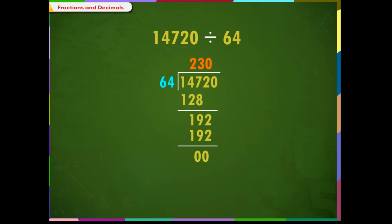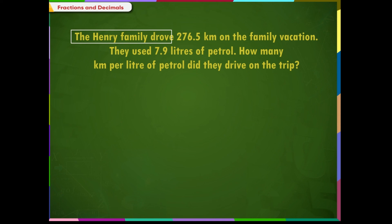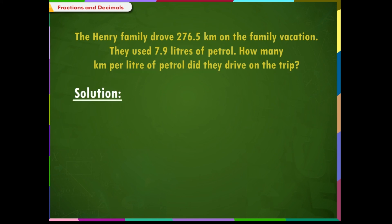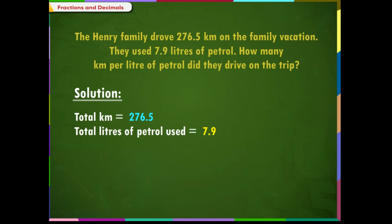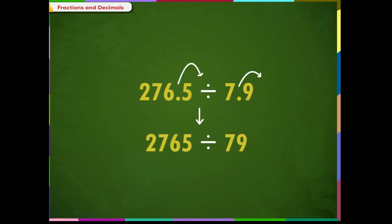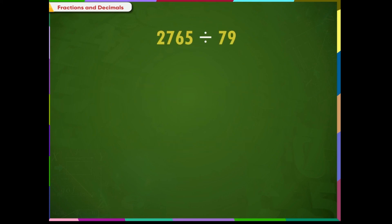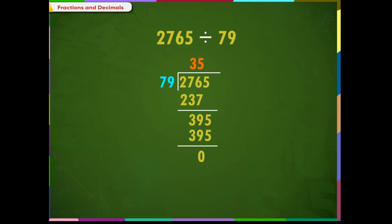There is no decimal point in the dividend. Example 4: the Henry family drove 276.5 km on their family vacation. They used 7.9 litres of petrol. How many km per litre of petrol did they drive on the trip? Solution: total km is equal to 276.5. Total litres of petrol used is equal to 7.9. Number of km per litre is equal to 276.5 divided by 7.9. Let's make the divisor a whole number by moving the decimal point to the right. The problem now becomes 2765 divided by 79. Solving using the long division method, the quotient is 35. There is no decimal place in the dividend, so the answer will not have a decimal place. Therefore, distance travelled per litre of petrol is equal to 35 km.